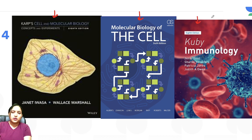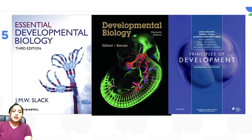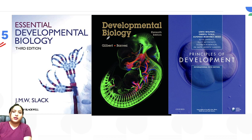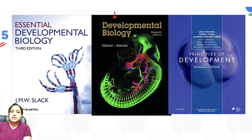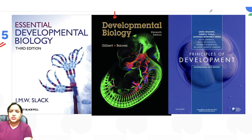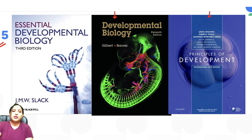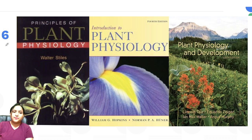For Unit 5, developmental biology, J.M.W. Slack is a very good book, but Gilbert is the bible of developmental biology. Principles of Development by Lewis Wolpert and Cheryl Tickle is also a very good book. You can refer to any of these three books for developmental biology.